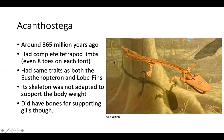The Acanthostega had similar traits to both the Eustenopteron and the lobe-fins. However, the skeleton — particularly the limb structures — couldn't support the weight of the organism on land. So that suggests this was something that could be adapted to land, but was still essentially a water-dwelling creature. Interestingly, this one also had bones for supporting gills.